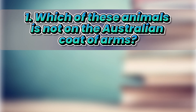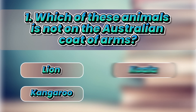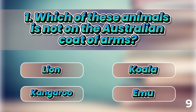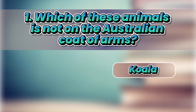Which of these animals is not on the Australian coat of arms? Lion? Kangaroo? Koala? Emu? It's Koala.